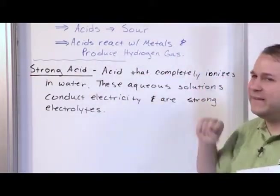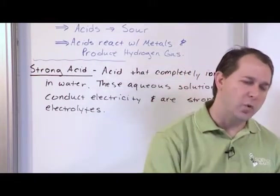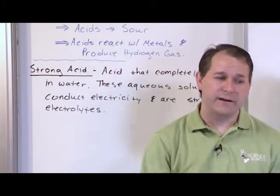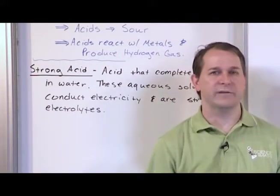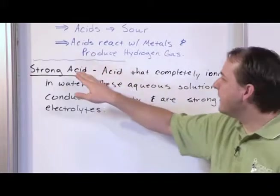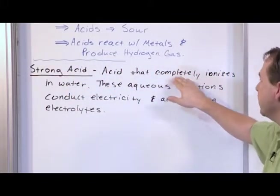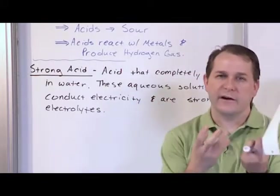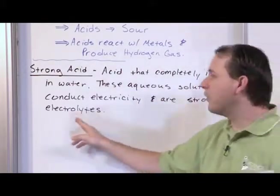Now we're talking about acids. An acid is a substance that, when you put it in water, breaks down — part of it breaks down into hydrogen ions. That's the definition of an acid. When a substance ionizes completely in water, it conducts electricity because there are lots of ions in solution, so we call it a strong electrolyte.